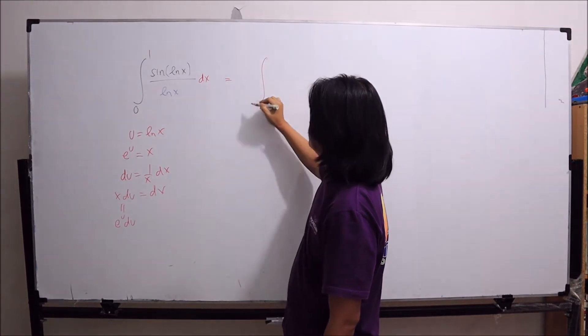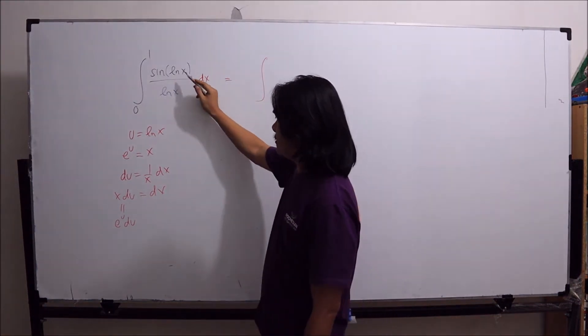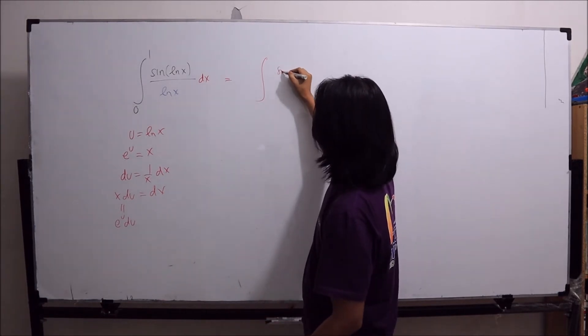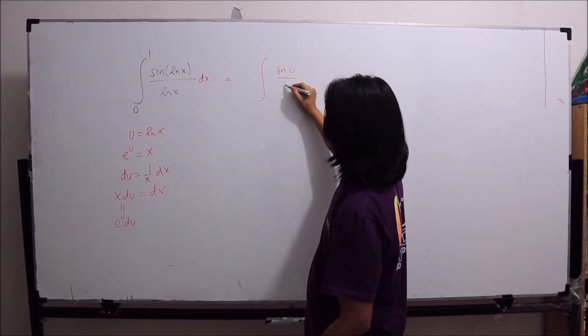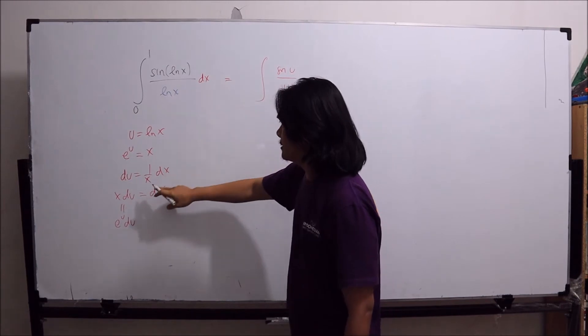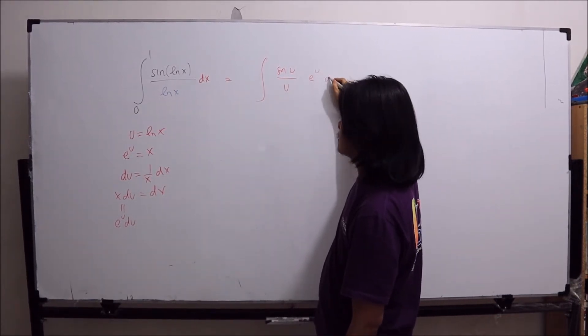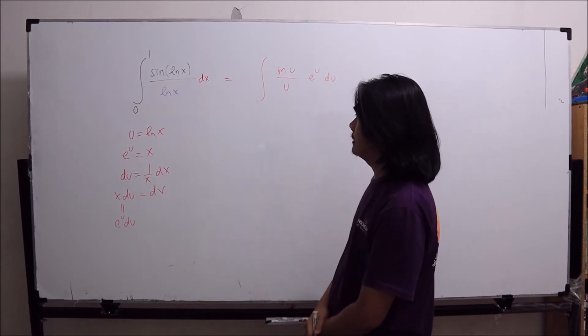Therefore, this integral is equal to u. This sin ln x becomes sin u over u. And dx is e to the u du. Right?